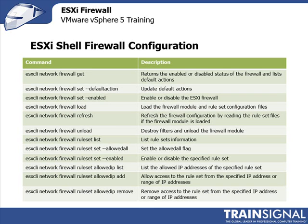From an ESXi shell firewall configuration perspective, for those who don't want to configure ESXi from the GUI and prefer command line through the shell, these are the different commands you can use against the firewall to configure it. There are a number of commands with descriptions on screen in case you want to configure your firewall from command line. What we're going to do now is use the GUI, and I'm going to show you how to get in and configure it, which is a little easier. But if you want to script anything or prefer command line, I've made that available as well. Let's go ahead and switch over to our vCenter.